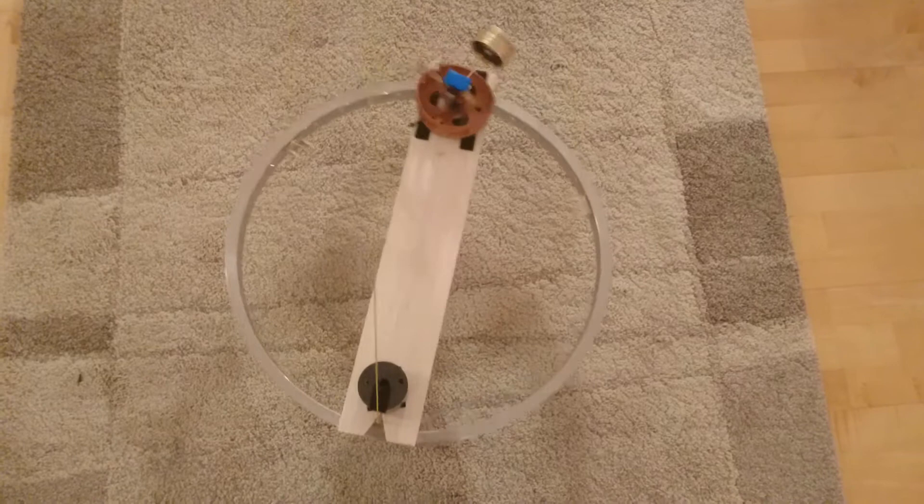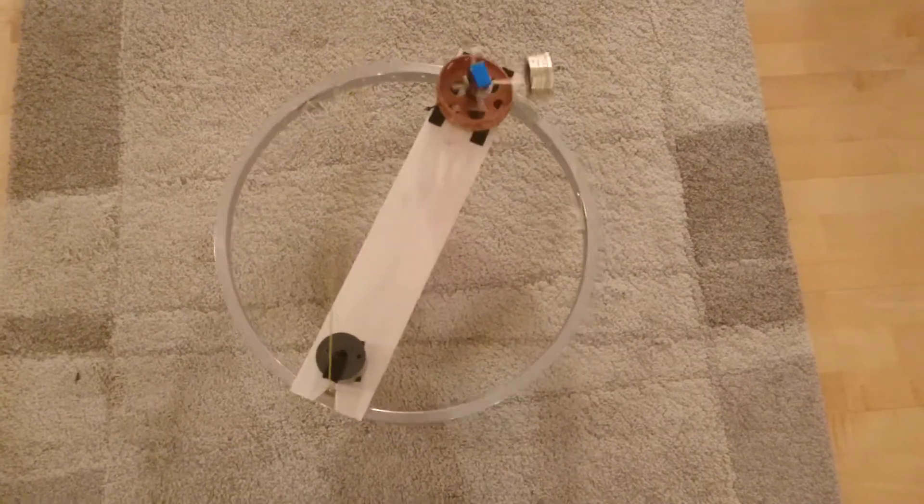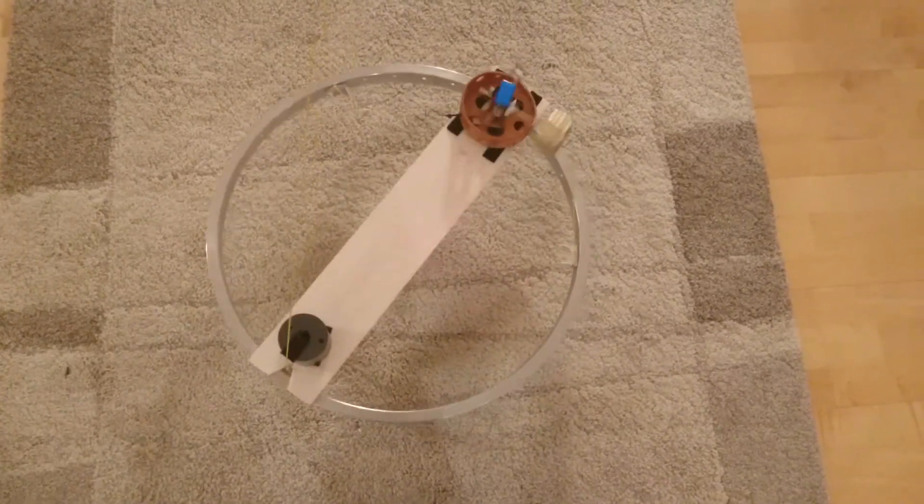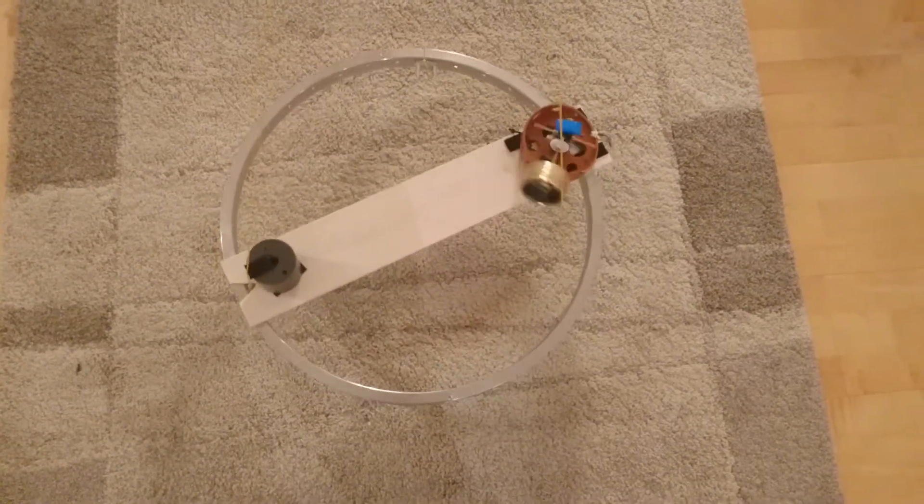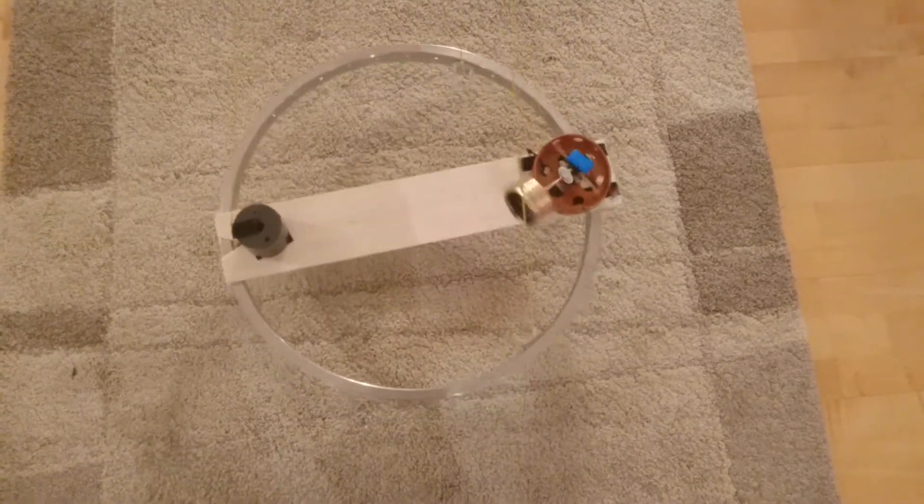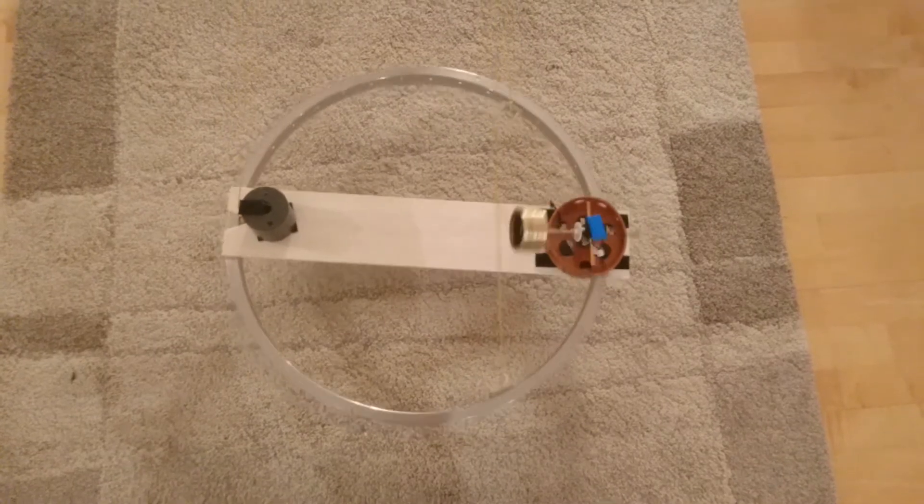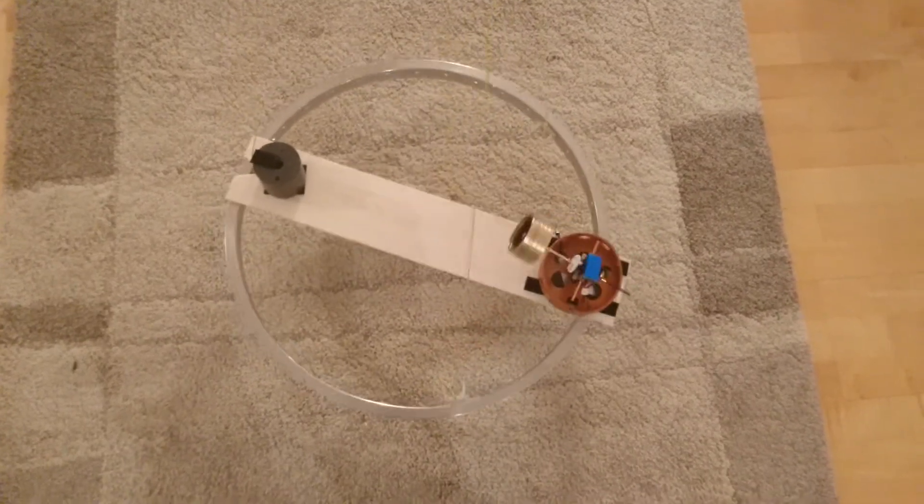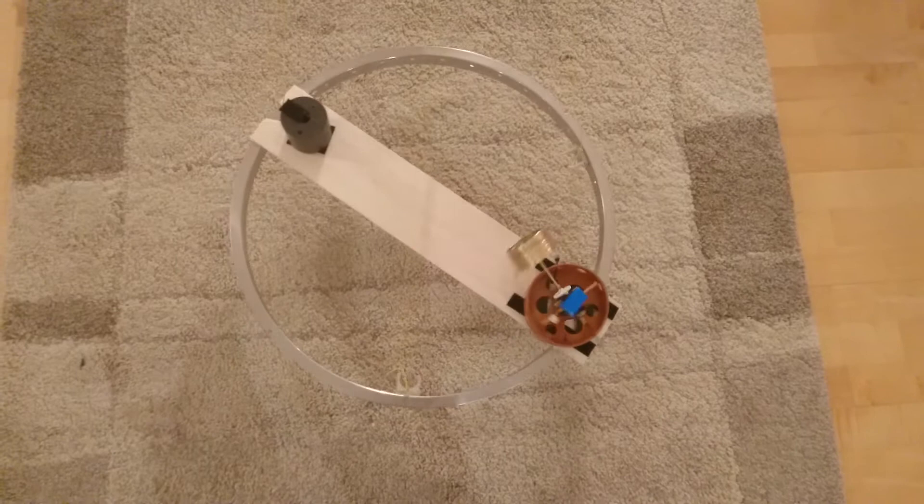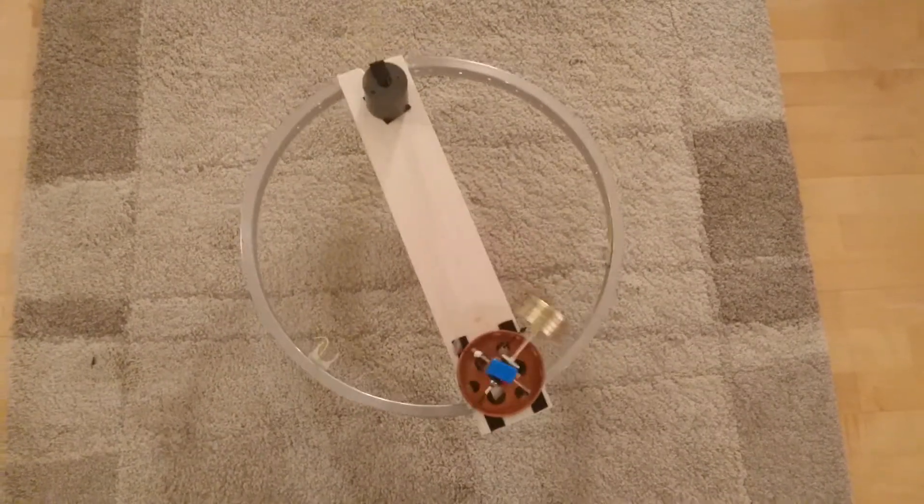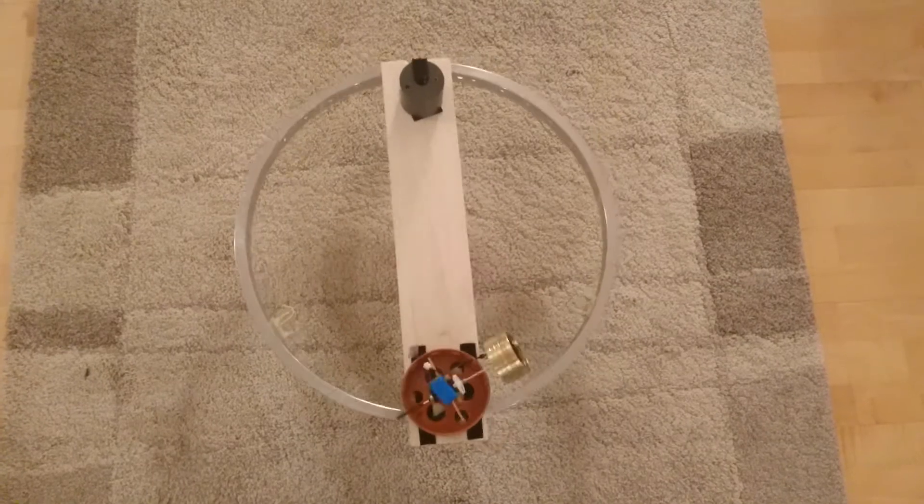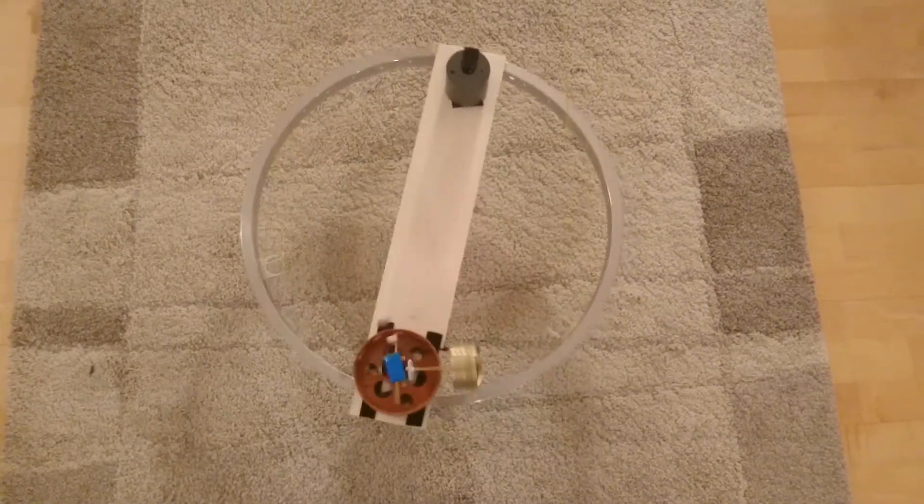As you can see, it spins clockwise. If it was a thread which was detwisting, it would spin counterclockwise, so there is no detwisting of a thread at all. Anyway, it is a monotron of Kevlar so it is not possible. So this is the real machine that makes spinning.